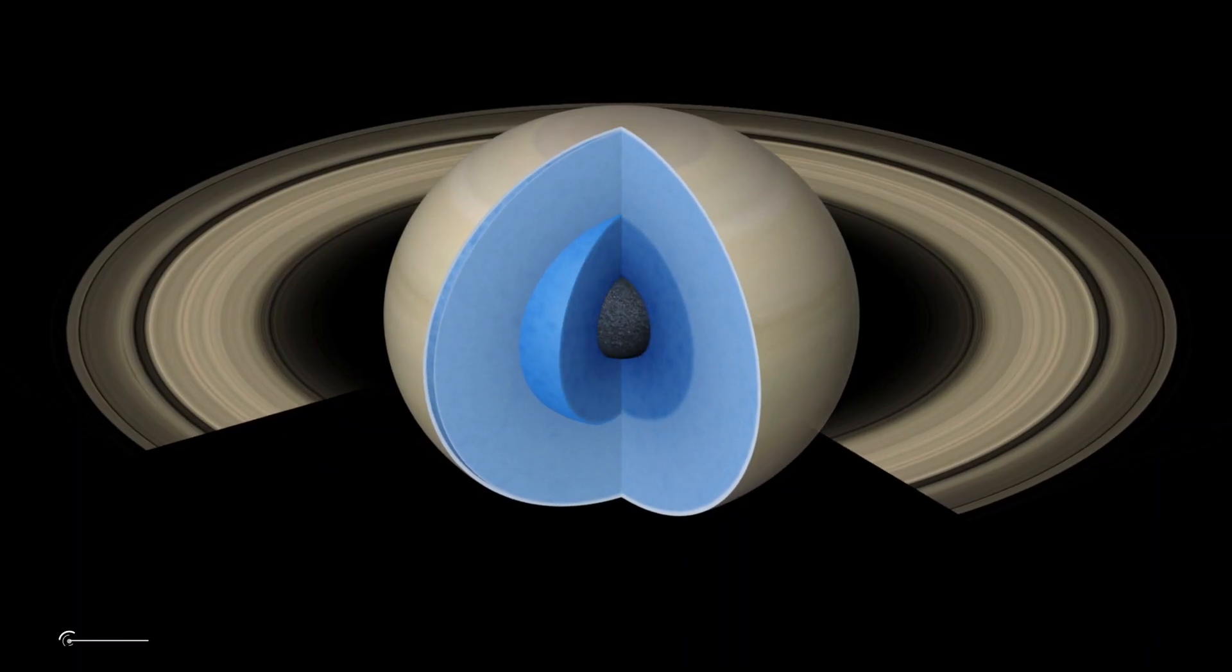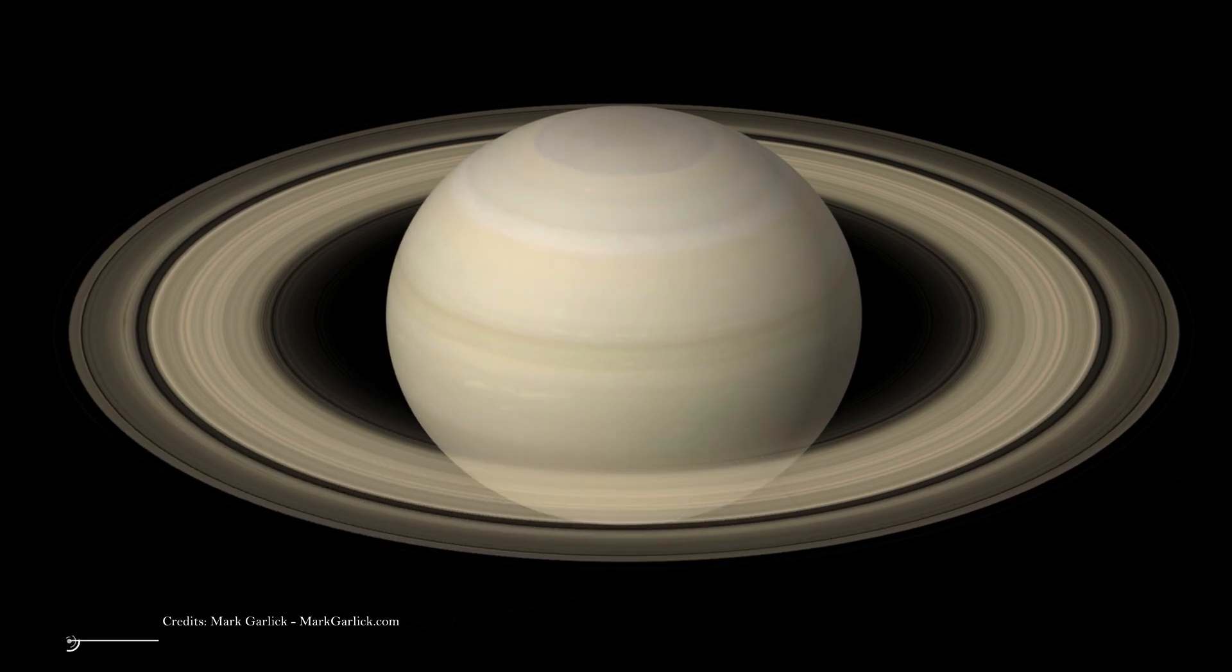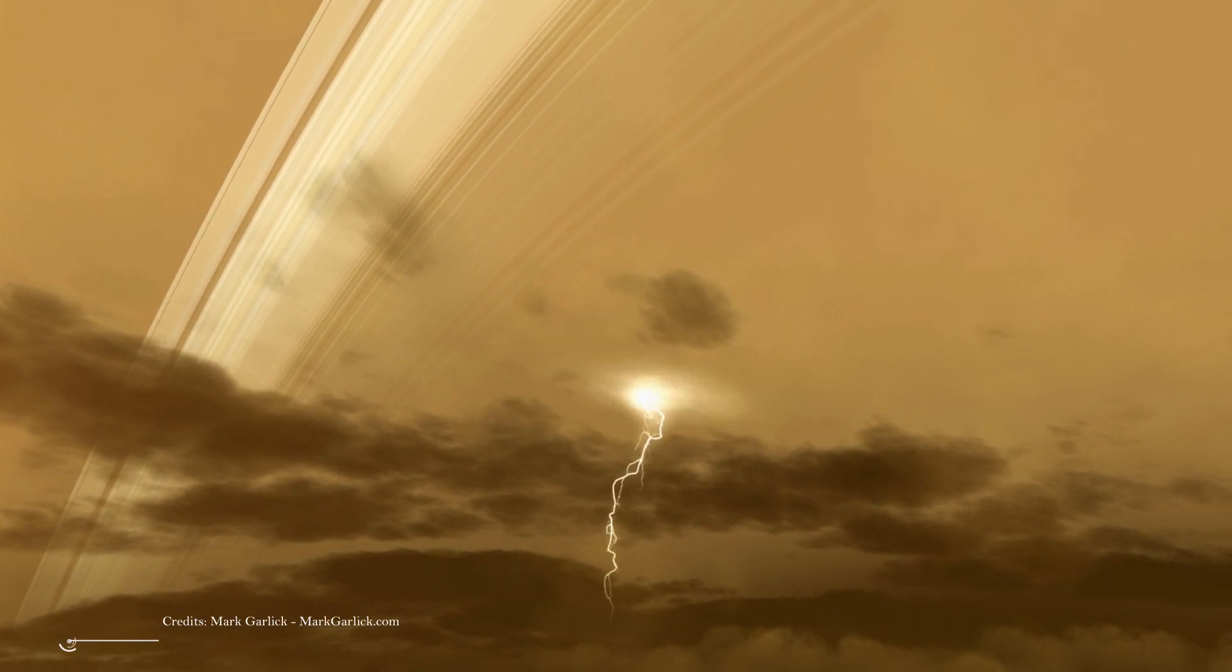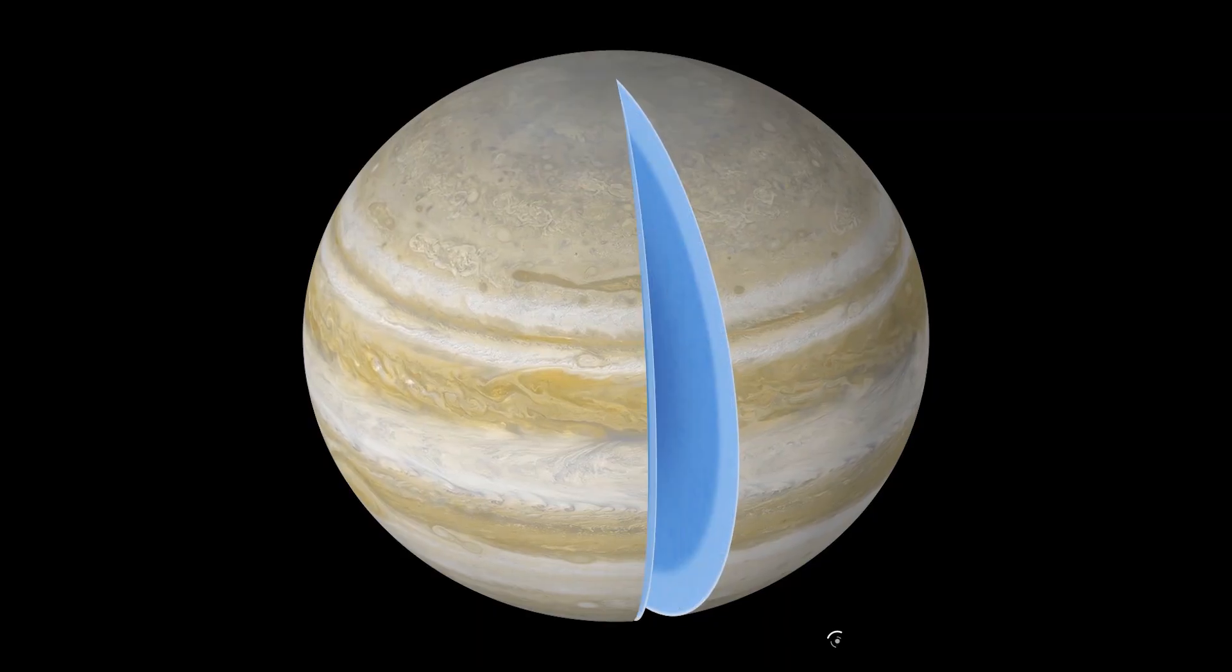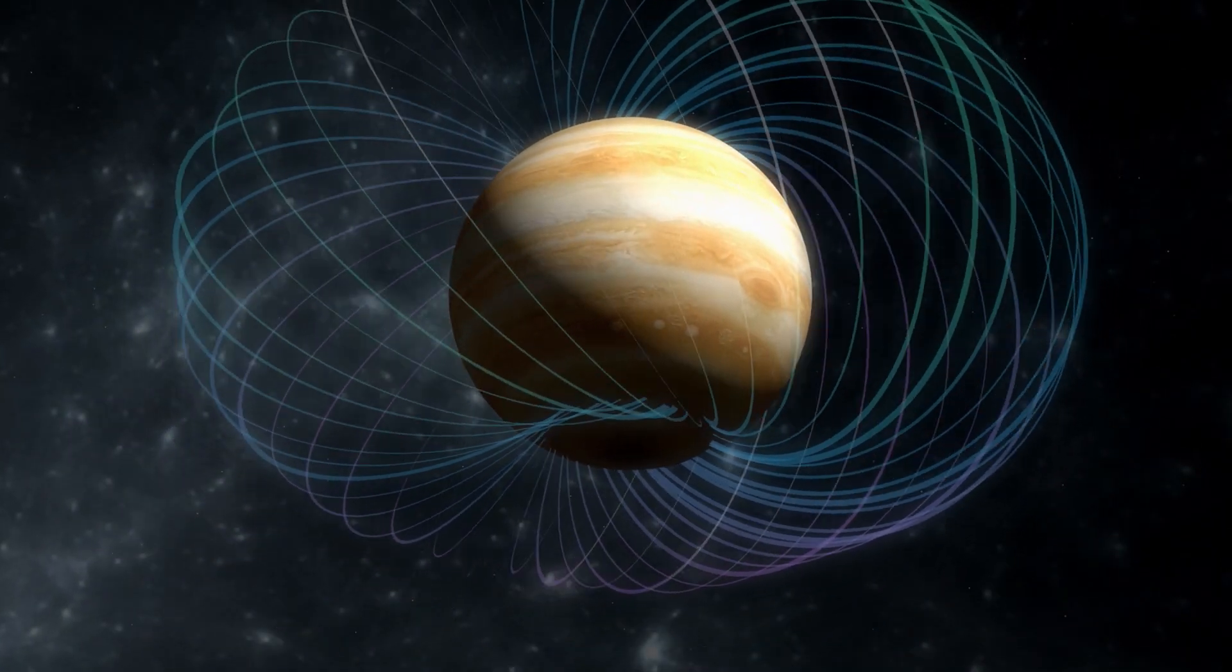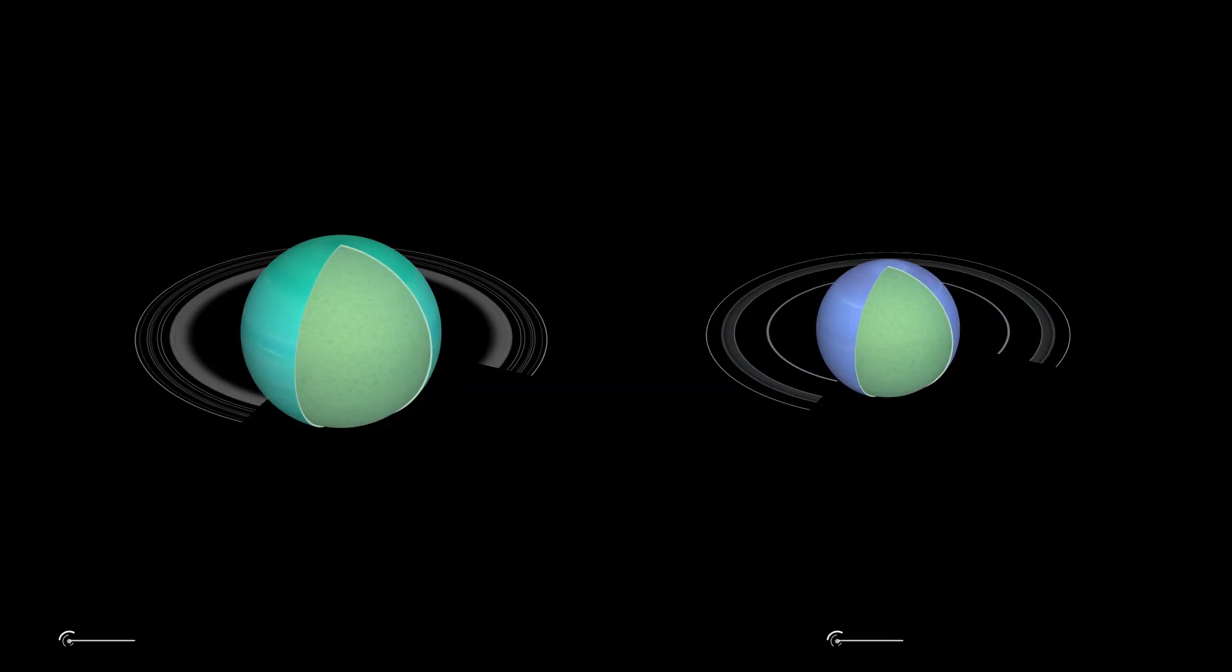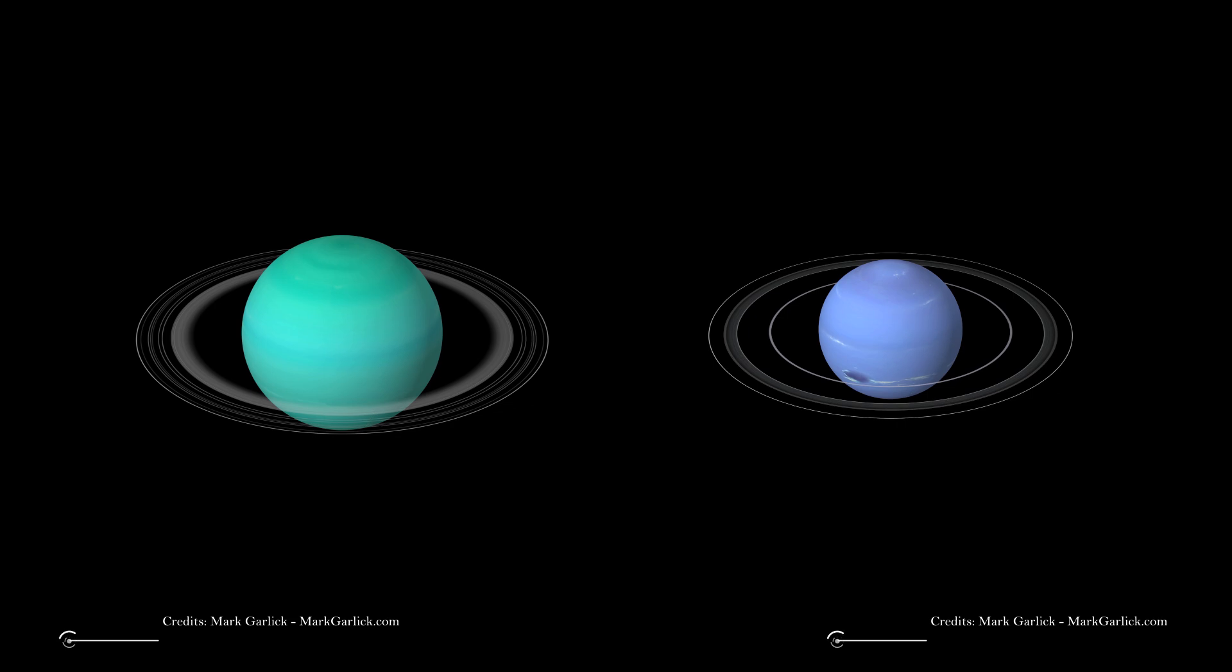Gas giants may have a rocky or metallic core, but the majority of their mass is in the form of gas. Since the pressure is really high, gas on these planets might also be compressed into a liquid state, just like Mercury in a thermometer. Jupiter and Saturn probably have liquid metallic hydrogen interiors, which allows them to have a magnetic field, since liquid hydrogen conducts electricity. Scientists believe Uranus and Neptune have interiors that contain a mixture, or layers, of rock, water, methane, and ammonia.